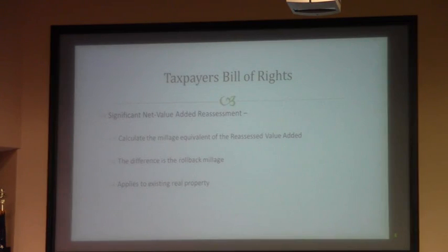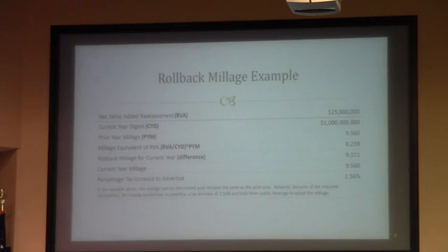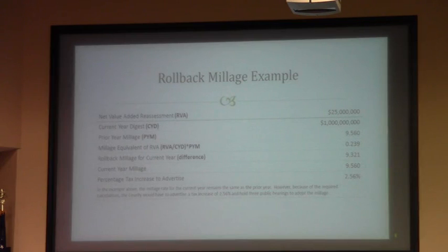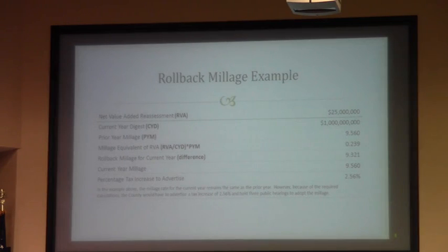Significant net value added reassessment: you calculate the millage equivalent of that reassessed value, and the difference between that and your last year's millage is your rollback millage. This applies to all existing real property. As an example, if you had net value added reassessment of $25 million, your current year digest was $1 billion, and your prior year millage was $9.56, the millage equivalent of that $25 million is $0.239 mils. So your rollback millage would be $9.321. If you left your millage at the current $9.56, you would have to advertise a tax increase of 2.56% even though you didn't change the millage rate.